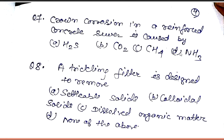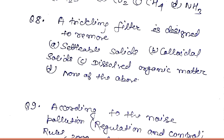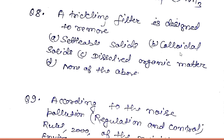Question number seven: crown corrosion in a reinforced concrete sewer is caused by — options are H2S, CO2, CH4, and H3. Question number eight: a trickling filter is designed to remove — options are settled solids, colloidal solids, dissolved organic matter, or none of the above.